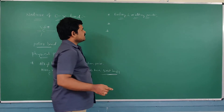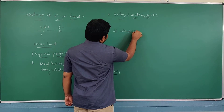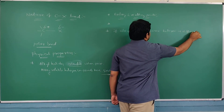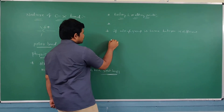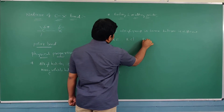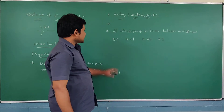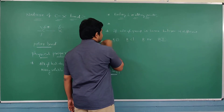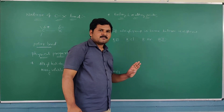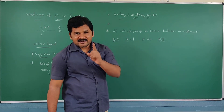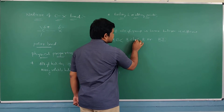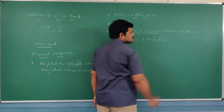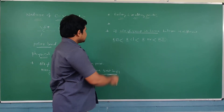Now consider different conditions. If the alkyl group is the same but the halogen is different — for example RF, RCl, RBr, RI — as the size of the halogen atom increases, boiling and melting points increase due to increasing van der Waals forces. So the order is: RF < RCl < RBr < RI.